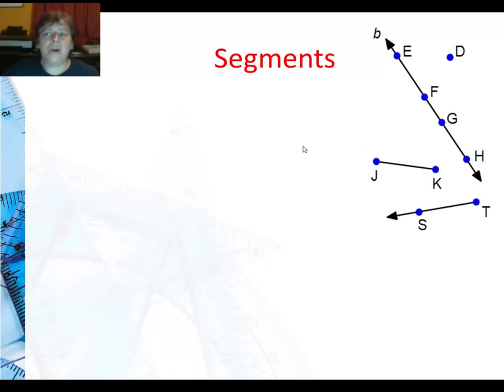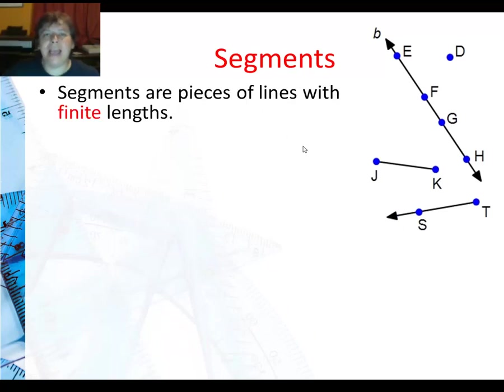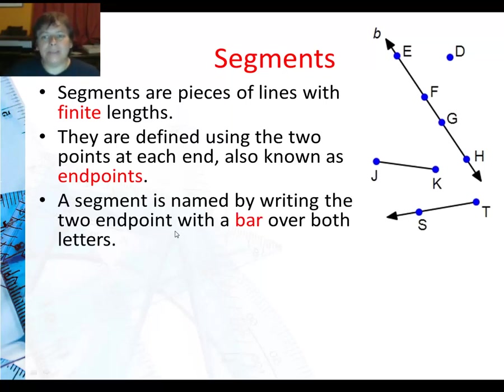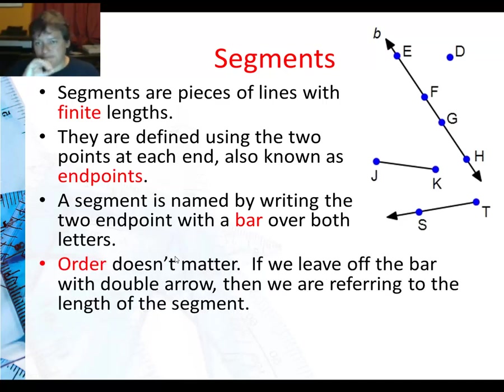Now segments are pieces of lines. They definitely have finite lengths. Finite means it stops, it's measurable. They are defined using the two points at each end of the segment. So you want the last point and the first point. And the segment is named by writing the two endpoints, that should be an S, with a bar over both letters. There are no arrows because the arrows signify going on forever.